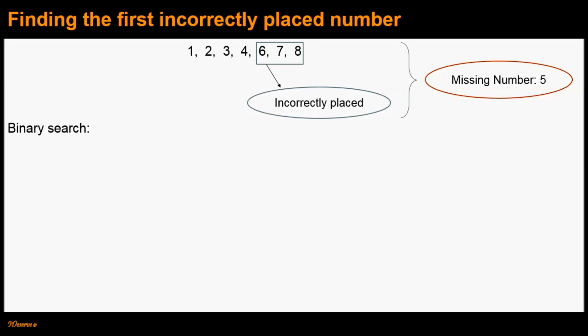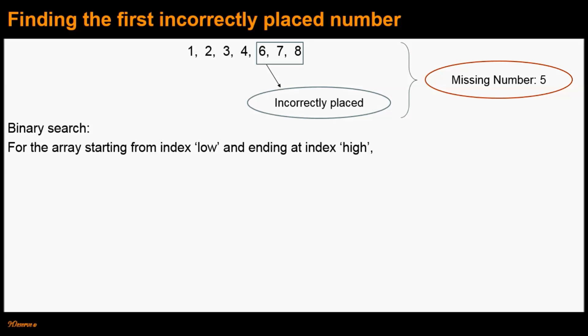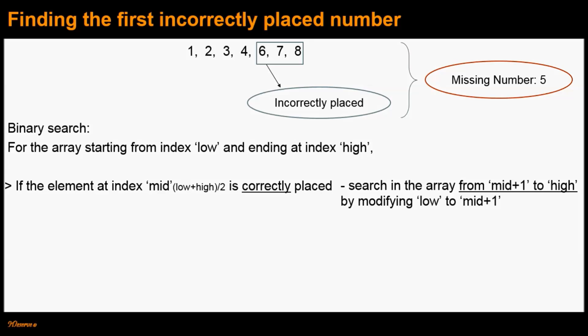With this idea in place, let's look at the algorithm for finding the first incorrectly placed number. The algorithm is basically a modified binary search. If the given array starts at index low and ends at index high, we first calculate the mid index as (low + high) / 2, then check if the element at index mid is correctly placed. If it is correctly placed, then all elements to the left of mid are also correctly placed, so we search for the first incorrectly placed number in the right half, from mid plus 1 to high, by modifying low to mid plus 1.